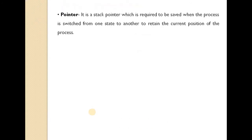The first field of this block is the pointer. It is a stack pointer, which is required to be saved when the process is switched from one state to another to retain the current position of the process. Similar to how we use a pointer in C or C++ to store an address, here we use this pointer to store the current position of the process.